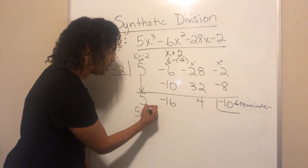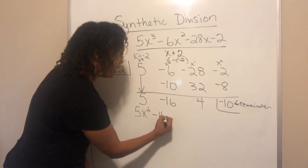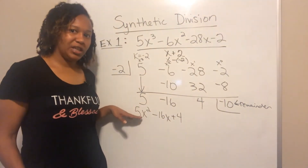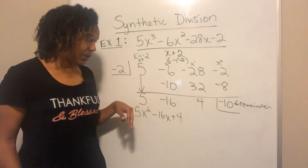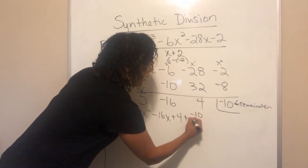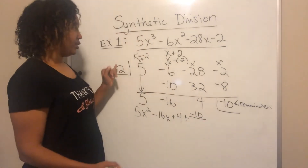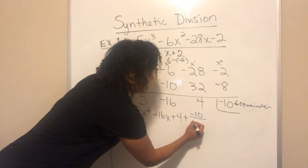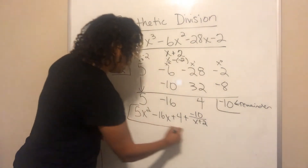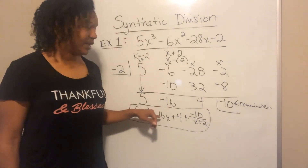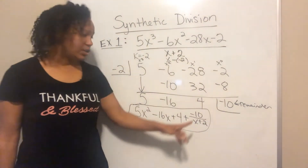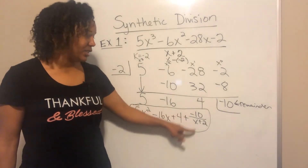So the answer is 5x² minus 16x plus 4, starting from the highest exponent going down. For the remainder, you write it over the divisor, which is x plus 2. The final solution is 5x² minus 16x plus 4 minus 10 over x plus 2.